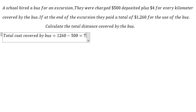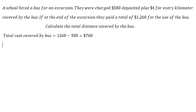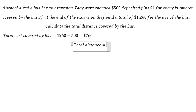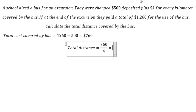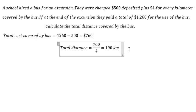That gives us 760 US dollars. Next, we can find the total distance by dividing 760 by 4. After we calculate this, we find the total distance covered by the bus, which is 190 kilometers.